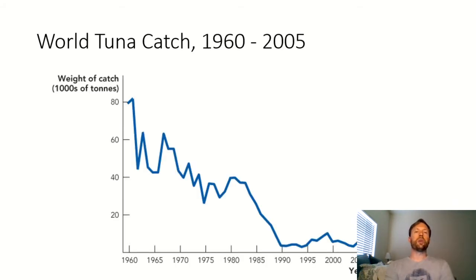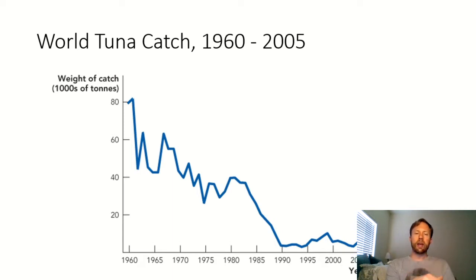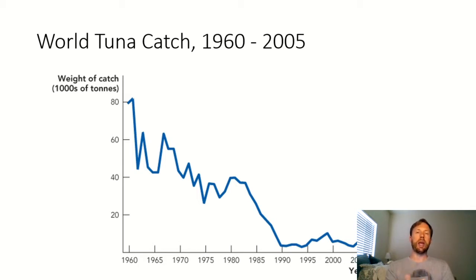Here's an example: the world tuna catch from 1960 to 2005, from your textbook. The weight of catch in thousands of tons is on the Y axis, and the year is on the X axis. In the 1960s, it was possible to catch large tonnages of tuna. That drops off through the 1960s and 1970s as sushi became more popular in the Western world. Then in the 1980s, demand ramped up even more, and starting around 1983, the world catch just drops off a cliff in terms of available tuna.